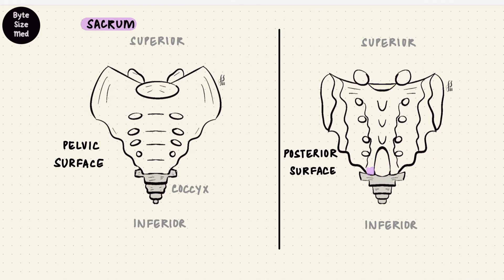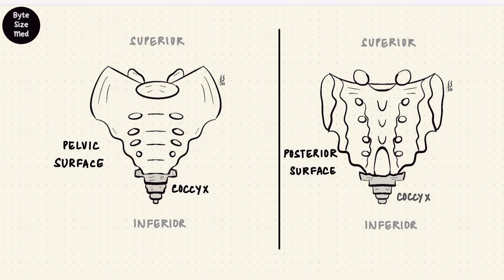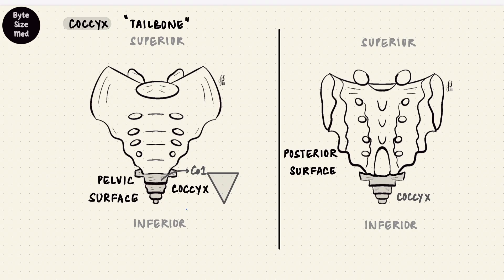On either side of the sacral hiatus are horns called the sacral cornua, and the sacrum articulates with the coccyx — the tailbone. It's small because it doesn't bear weight, and it's also triangular like the sacrum, with the largest being the first coccygeal vertebra, which articulates with the sacrum by the coccygeal cornua. This too starts off with four to five vertebrae but fuses over time. It too has a pelvic surface and a posterior surface, like the sacrum.